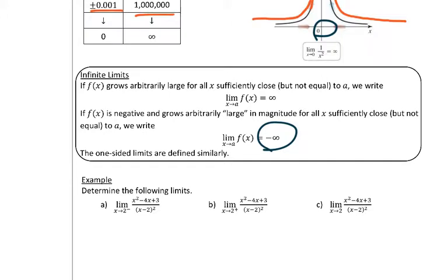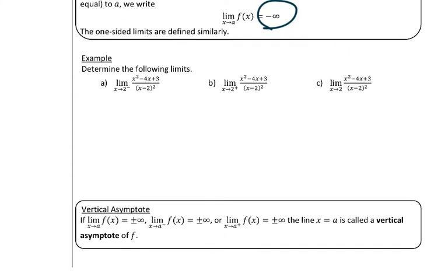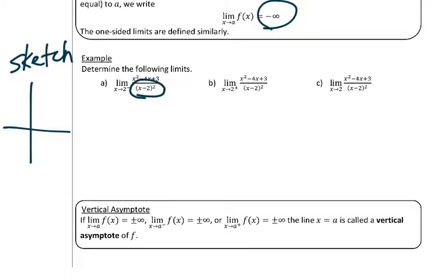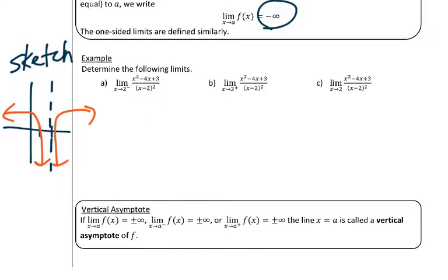Let's look at some examples. In these three examples, it says determine the following limits. I'm going to draw a sketch of the graph on the side. If I were to draw this function — and you should be able to tell algebraically as well — there is a denominator here, and if x is 2, there is a vertical asymptote. We can't have 0 in the denominator. From the left side, as I get closer and closer to the asymptote, notice the y values are forever going down. So from the left side, we can say it's going to negative infinity.